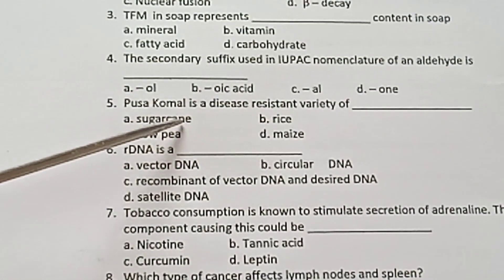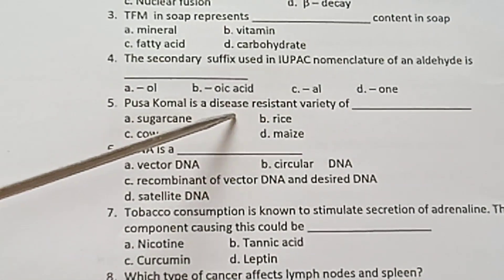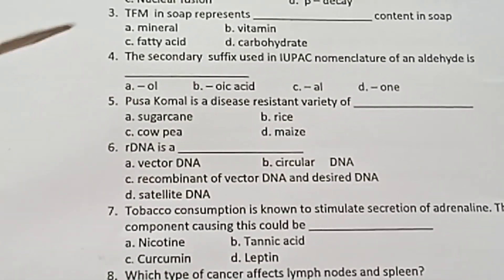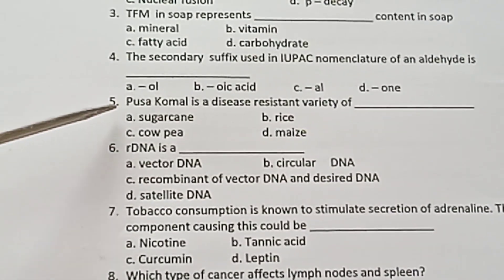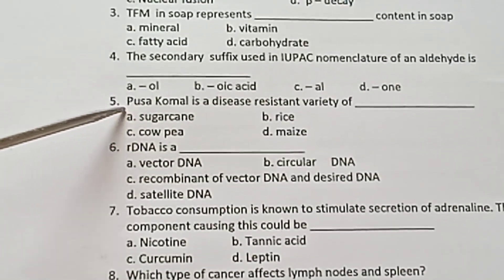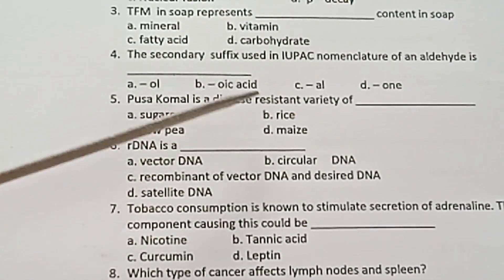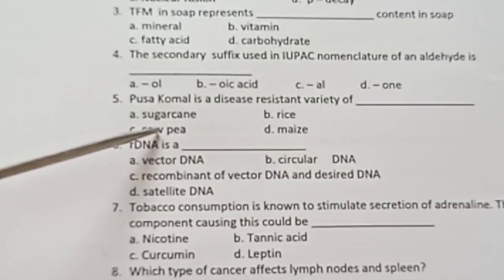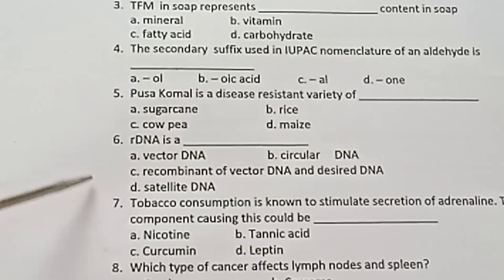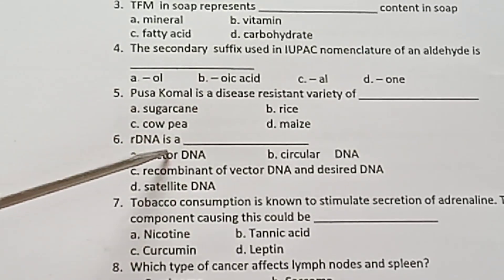Question 5: Fusocomal is a disease-resistant variety of — A) Sugar Cane, B) Rice, C) Cow, D) Mice.